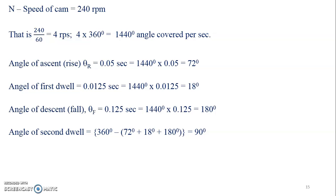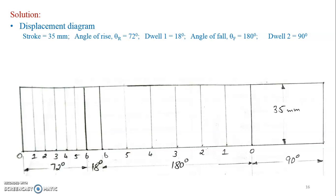Now I'll draw the displacement diagram. The stroke is 35 mm, angle of ascent is 72 degrees, first dwell is 18 degrees, angle of descent is 180 degrees, and second dwell is 90 degrees. The first 72 degrees represents the angle of rise — it follows simple harmonic motion. Then dwell for 18 degrees. Then 180 degrees is the angle of fall, which follows UARM.